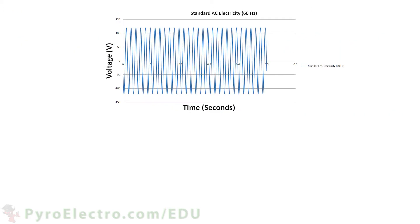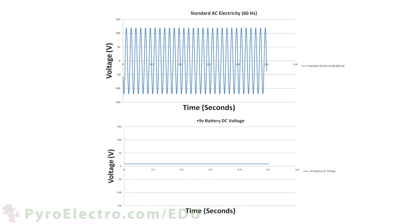Since AC electrical signals have voltages that are constantly changing, microcontrollers will often be continuously using the analog to digital converter modules to keep up with the changes. DC voltage levels are more natural for our digital devices since they stay steady and yield logic 0 or logic 1 on our digital inputs.